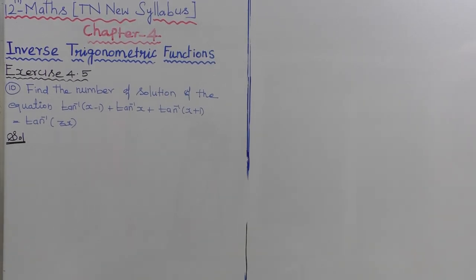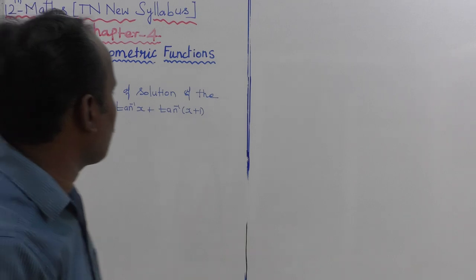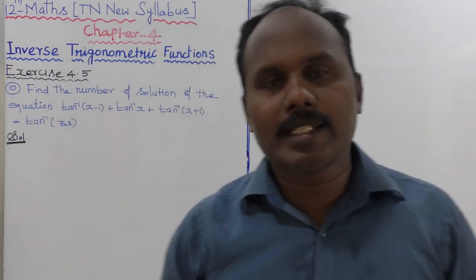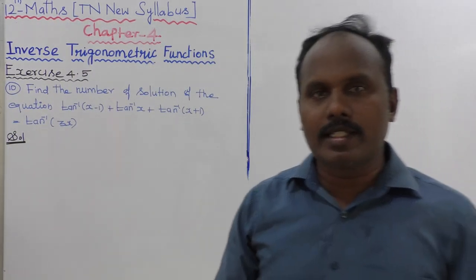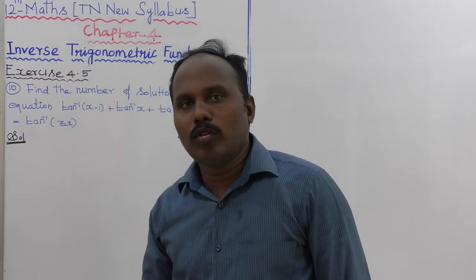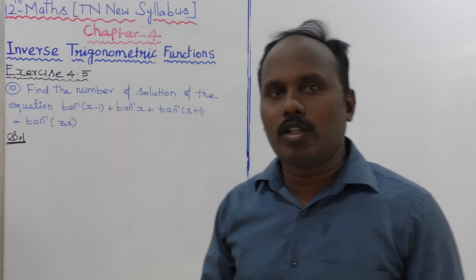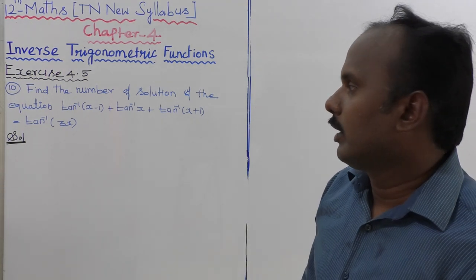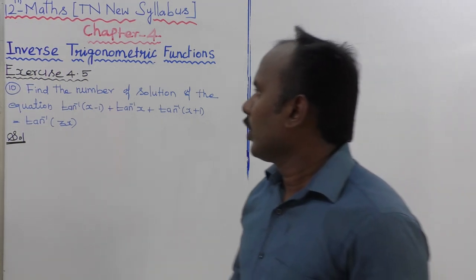Find the number of solutions for the equation: tan inverse of (x minus 1) plus tan inverse of x plus tan inverse of (x plus 1) is equal to tan inverse of 3x.